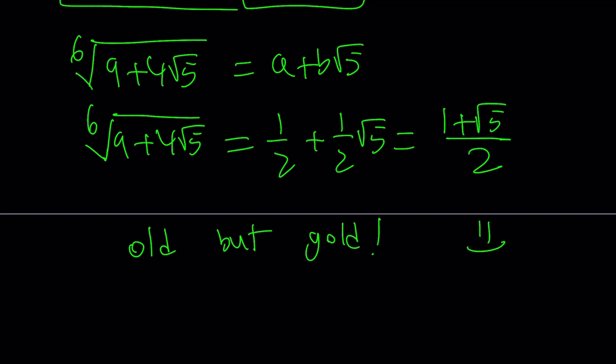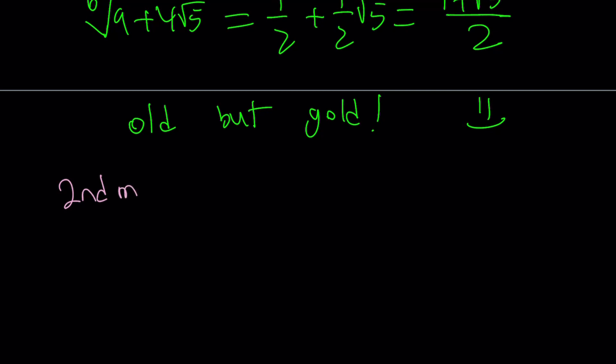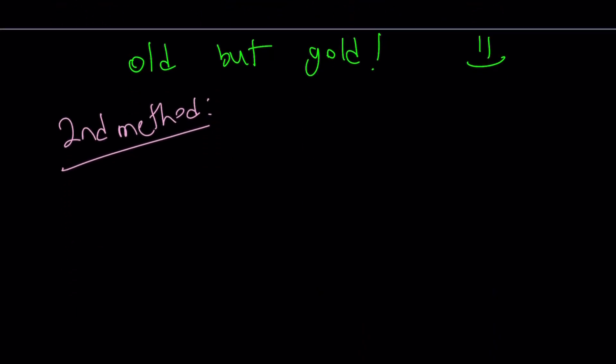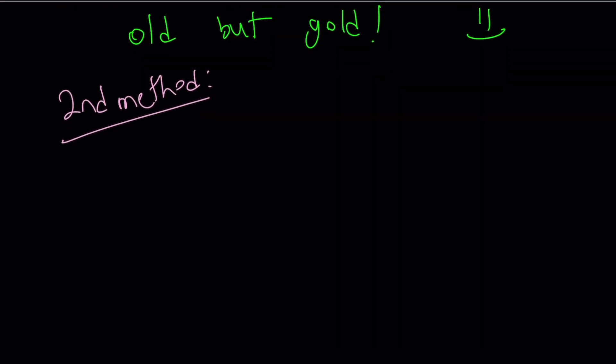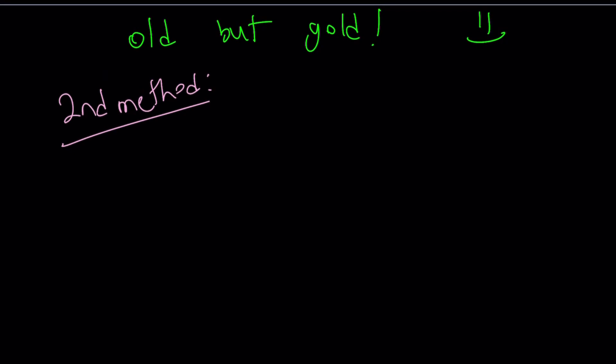All right, awesome. Now, let's go ahead and take a look at the second method. Second method is going to look more painful than the first one, but since I skipped a lot of the steps in the first method, that's why it kind of looks shorter, but in reality, it's not short at all. For my second method, let's first square root the expression, which is 9 plus 4 root 5.